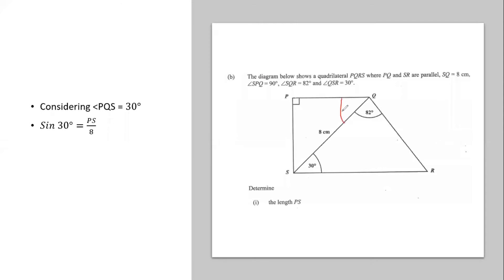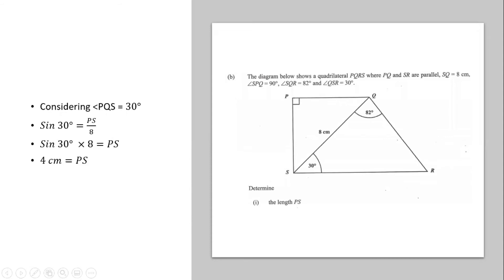The angle of 30 degrees is here, so the side opposite to it is PS, which is what we're finding, and the hypotenuse is 8 centimeters. So PS equals sine 30 degrees multiplied by 8. Sine 30 gives us 0.5, so 0.5 multiplied by 8 equals 4 centimeters. The length of PS is 4 centimeters.